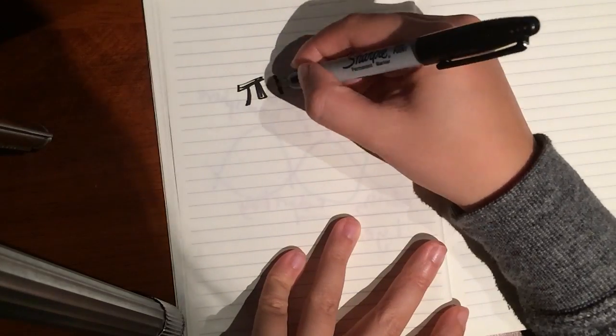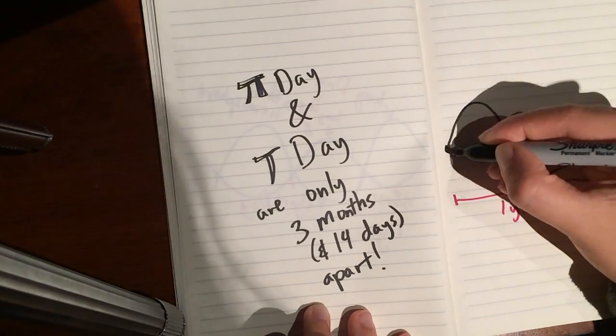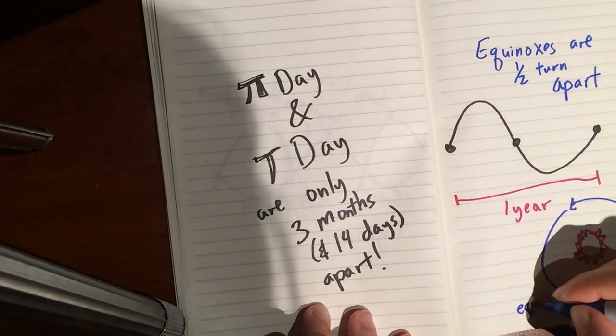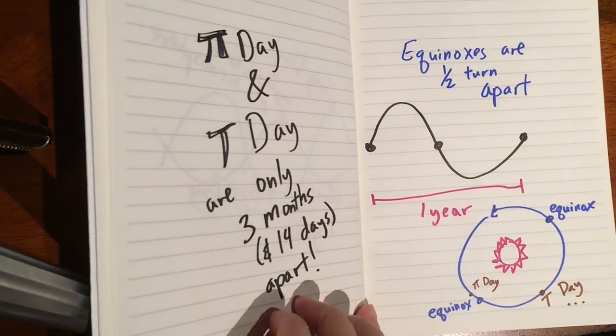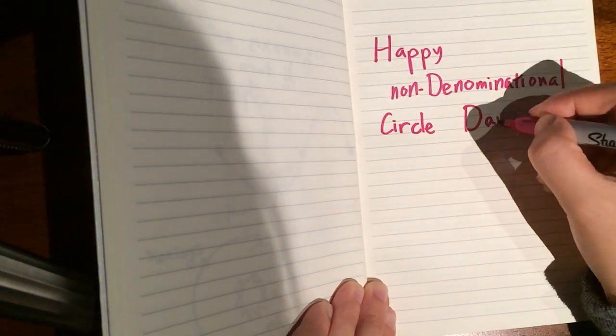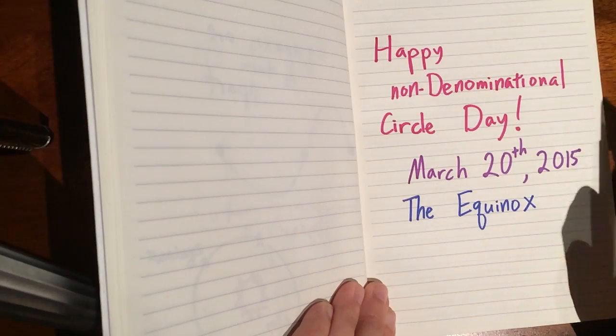And we already celebrate two circle days, one on March 14th for Pi, and one on June 28th for Tau. But wouldn't it be nicer to have our two circle days be half cycles apart, like the numbers are in real life, rather than just three months? So, this Pi Day, let's agree to focus on how awesome circles are by celebrating a non-denominational circle day, March 20th.